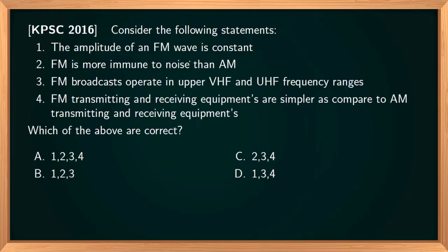A comparison of FM and AM systems is given. First: the amplitude of an FM wave is constant — that is correct. Second: FM is more immune to noise than AM — also correct, because noise effects can be reduced in FM using an amplitude limiter. Third: FM broadcast operates in the VHF and UHF frequency ranges — also correct. Fourth: FM transmitting and receiving equipment is simpler compared to AM equipment — this statement is wrong, since AM equipment is simpler than FM.